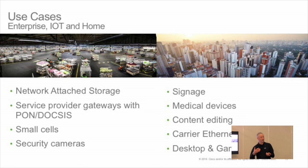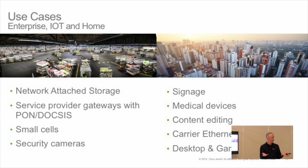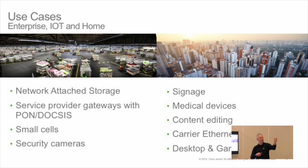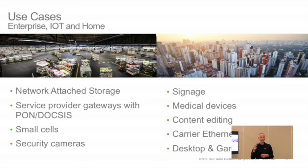Service provider gateways: today you can get more than a gig down from an SP gateway via Metro Internet or via FTTP. What's your hand-off to the house? 10GBase-T is too expensive. Small cell guys would really like more than a gig too — if they're doing right-sized antenna with local processing, they want to do 4 to 5 gig.